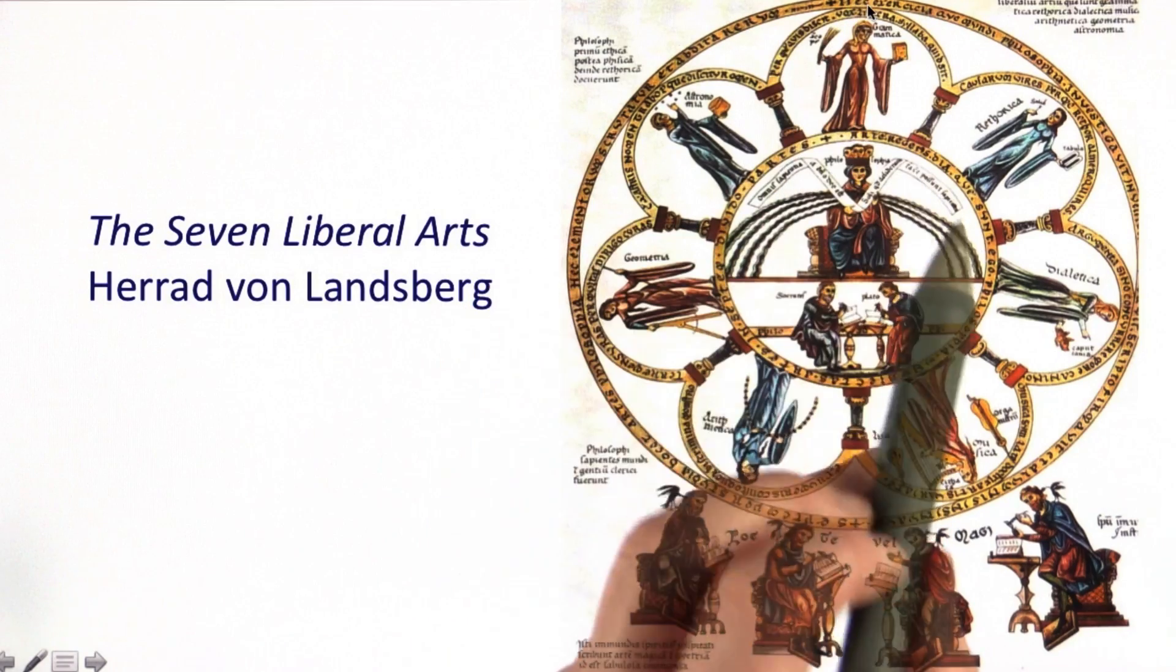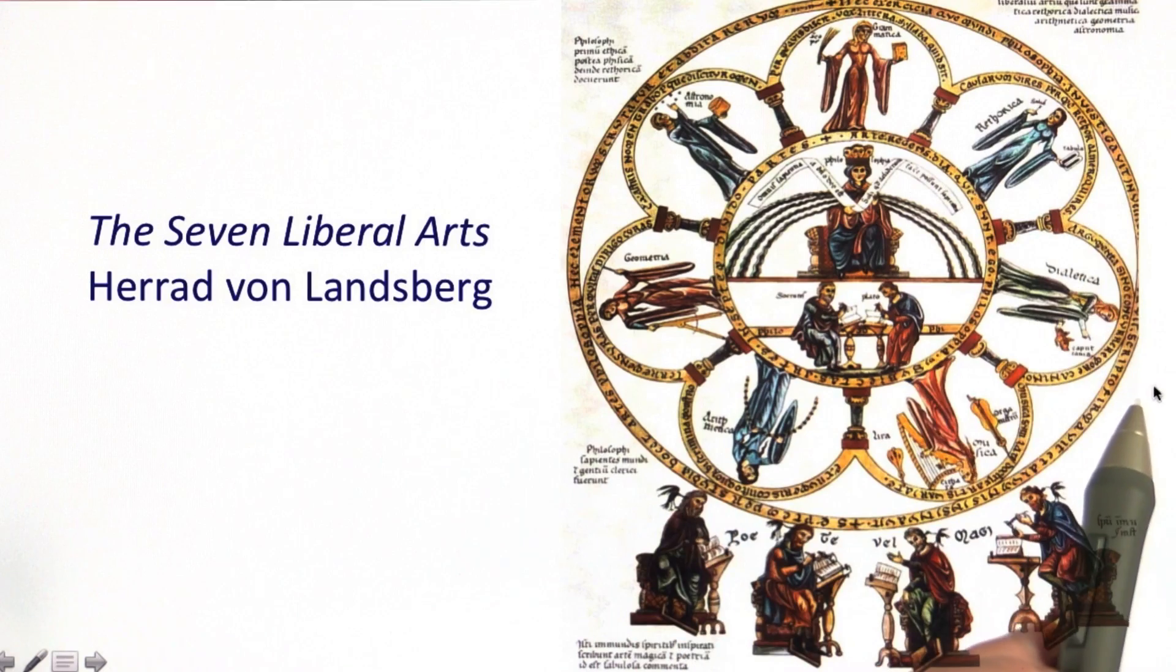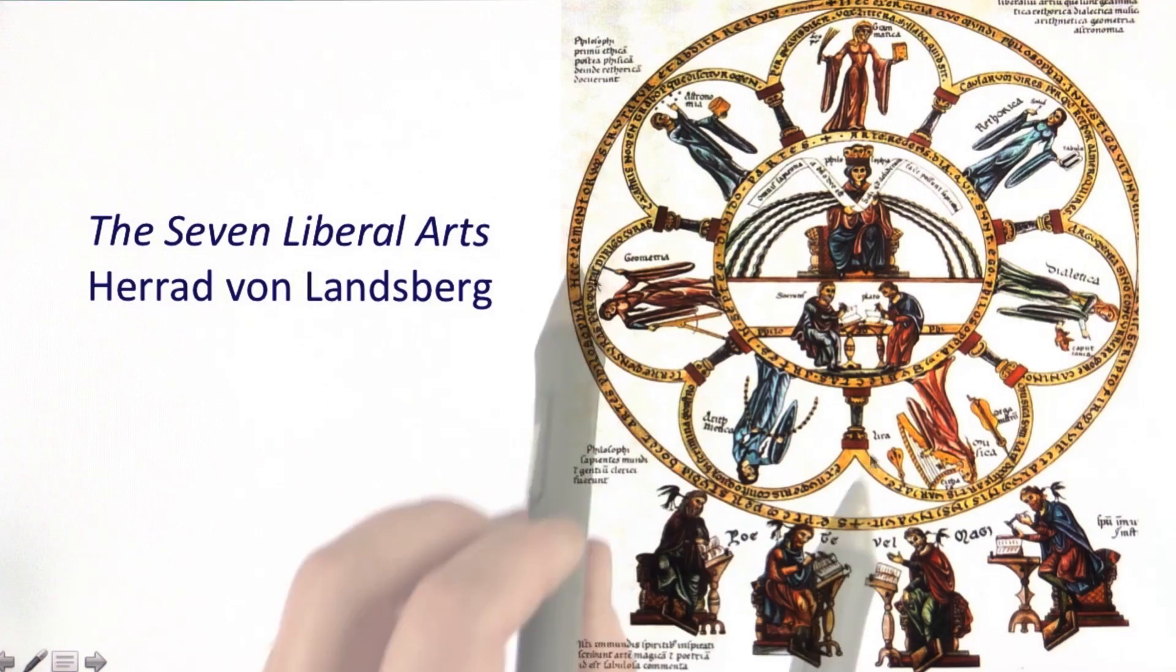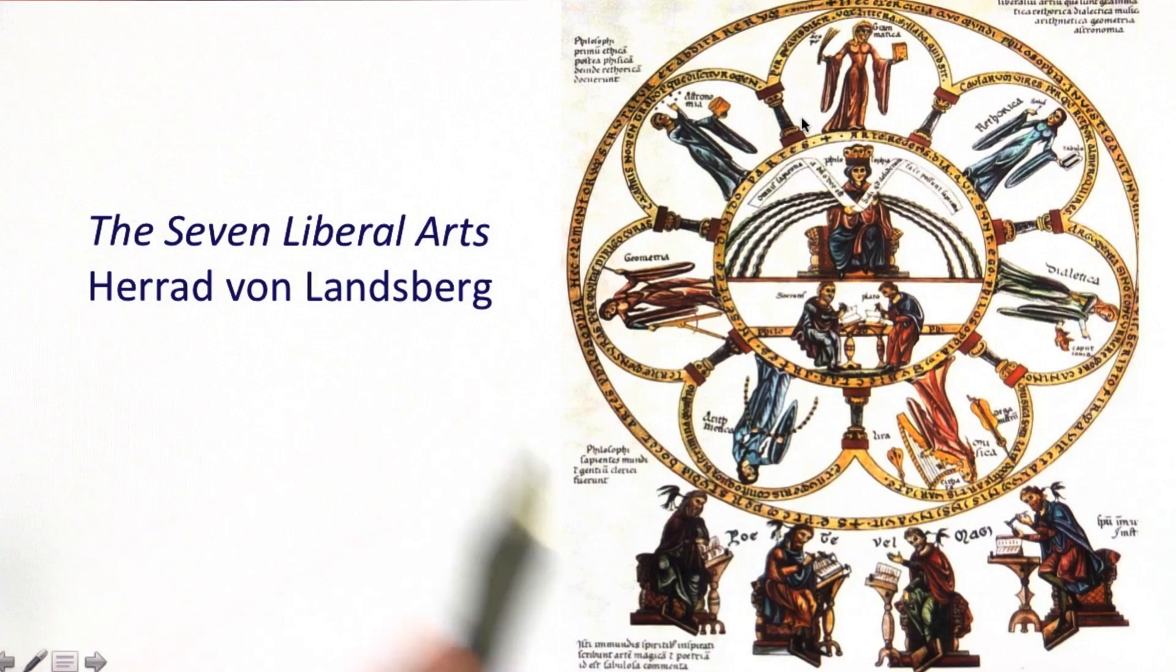And here's a picture of the medieval view of the liberal arts. There's grammar, rhetoric, dialect, which we would think of as logic today. Those are the three that have to do with language. And then there are four that have to do with number. The four that have to do with number are arithmetic, geometry, music, which is number in time, and astronomy, which is number in time and space.